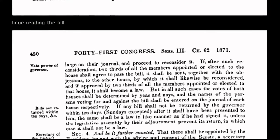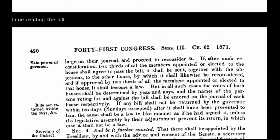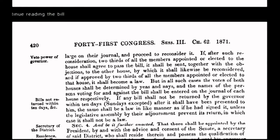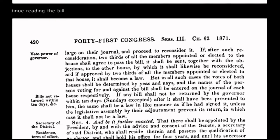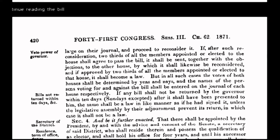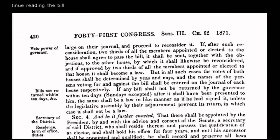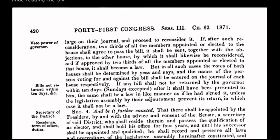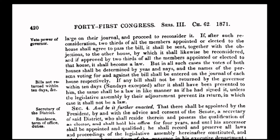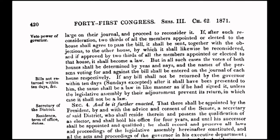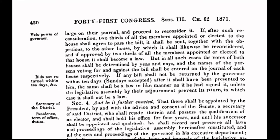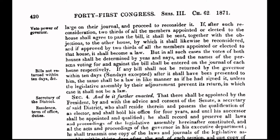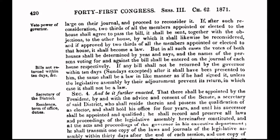By passing the Act of 1871, Congress committed treason against the people who were sovereign under the grants and decrees of the Declaration of Independence and the organic constitution. The Act of 1871 became the foundation of all the treason since committed by government officials. The United States isn't a country — it's a corporation.